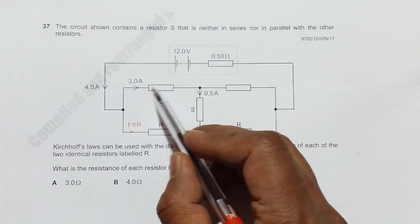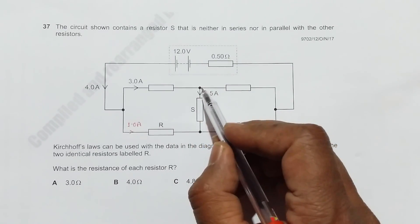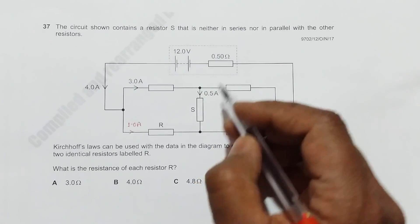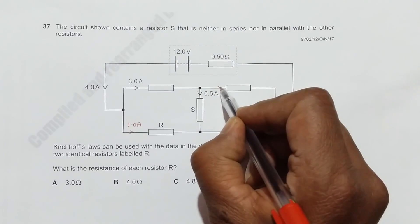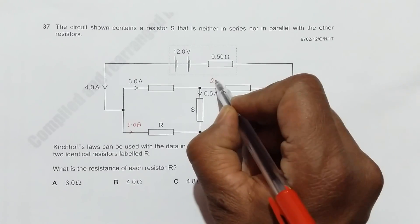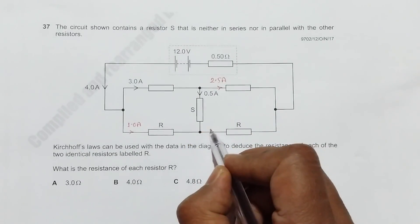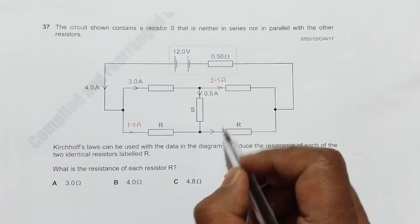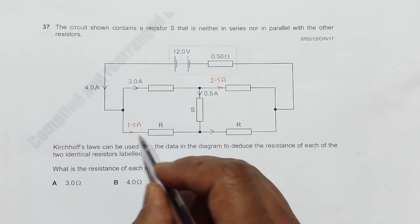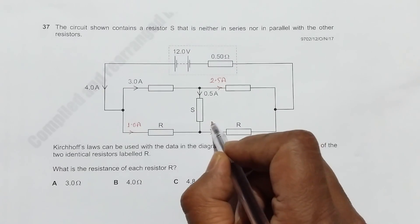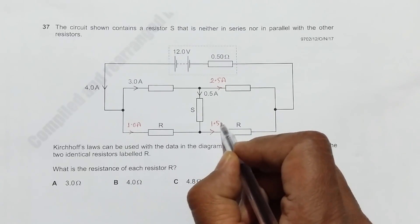Now out of this 3 amperes, 0.5 amperes comes to this path, which means the current here should be 2.5 amperes. And here it is the combination of 0.5 amperes and 1 ampere, so it should be 1.5 amperes.